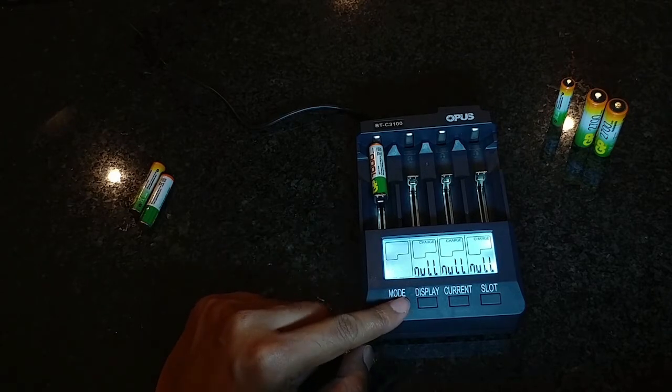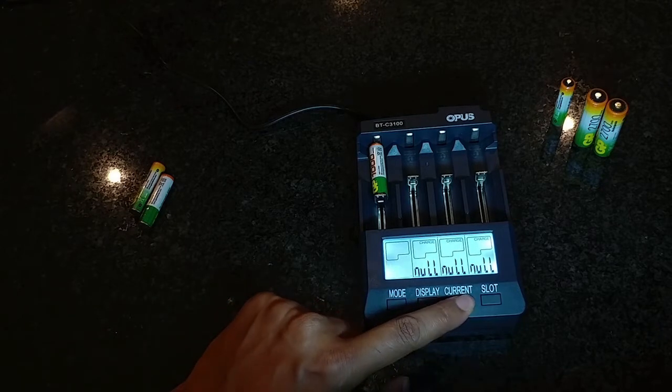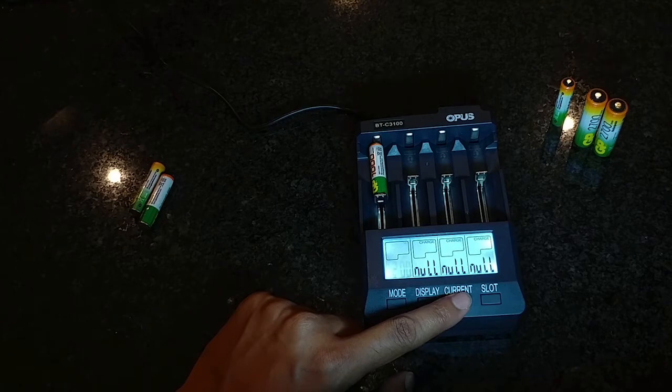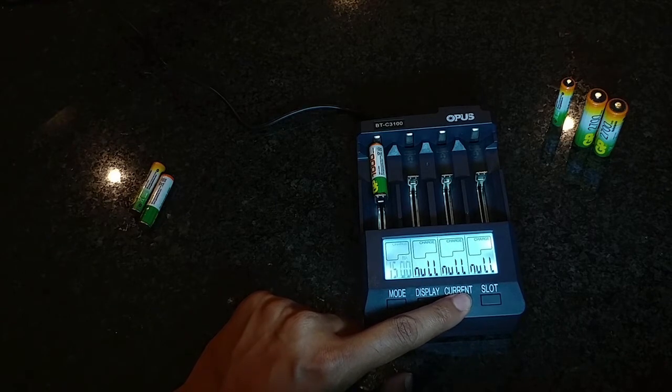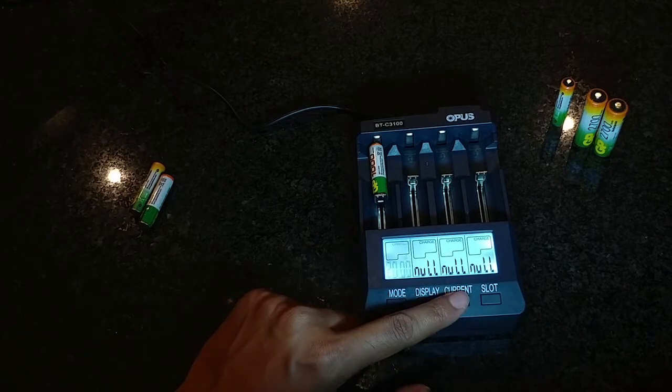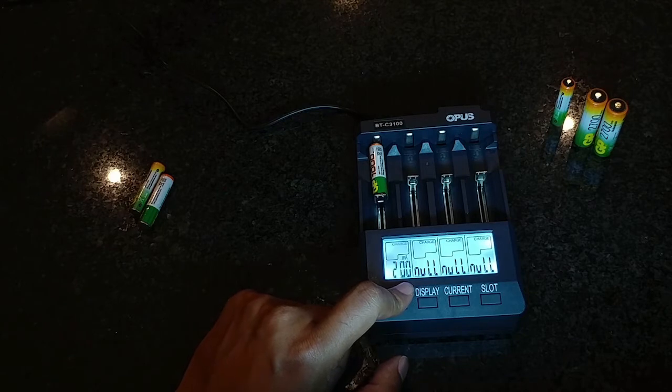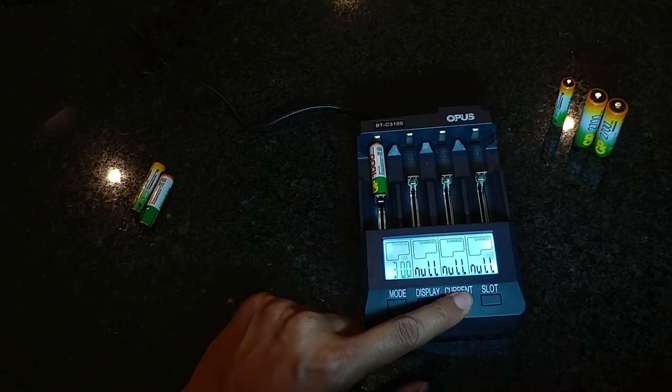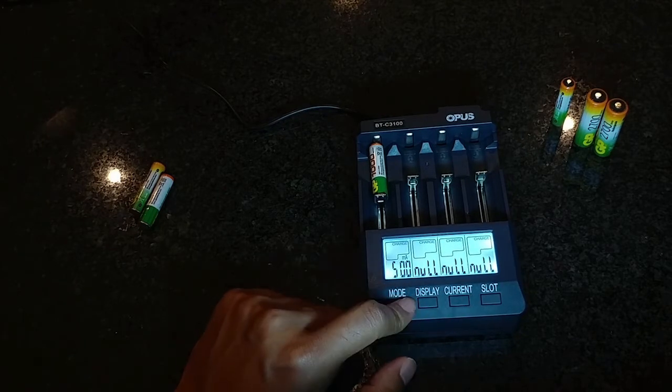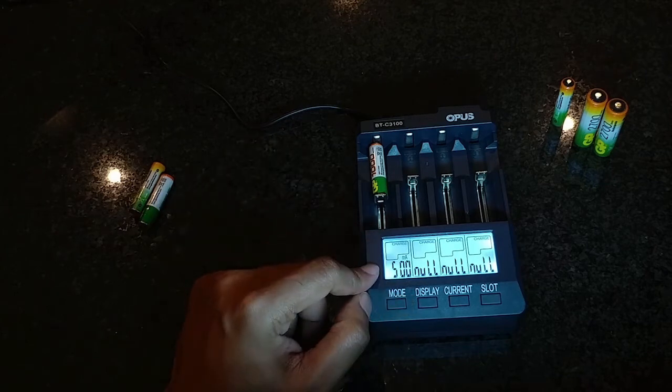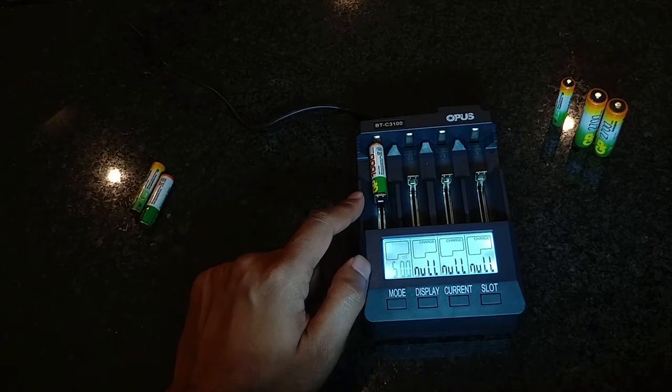Now let's just do a charge for example, and here you can change the current. So this goes all the way up to 2000 milliamperes and as low as 200 milliamperes. Default is 500. Let's leave it on that. Now if you wait, if you wait a while, it's going to eventually settle.